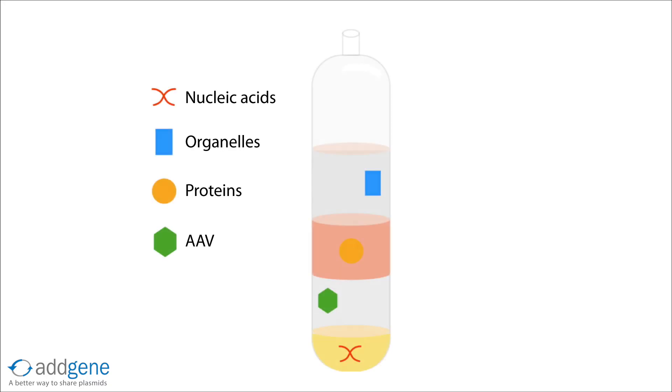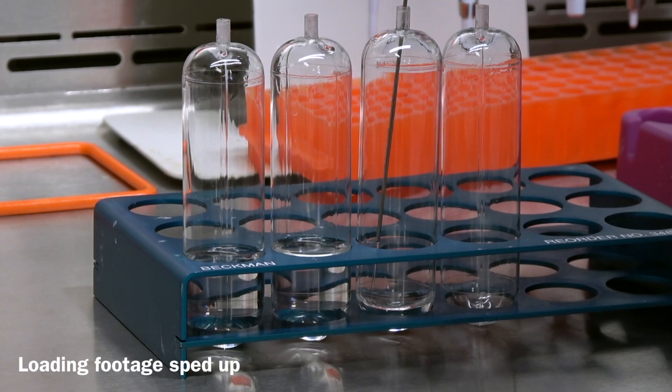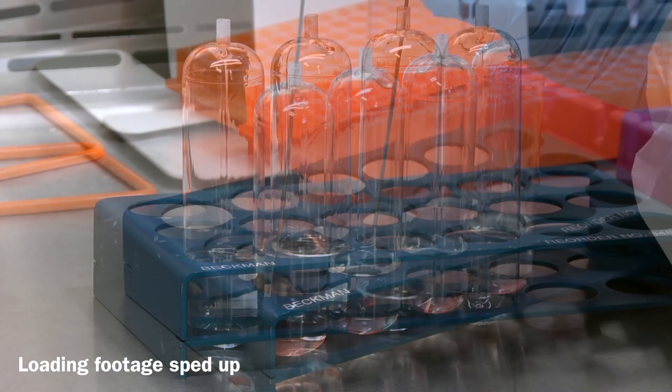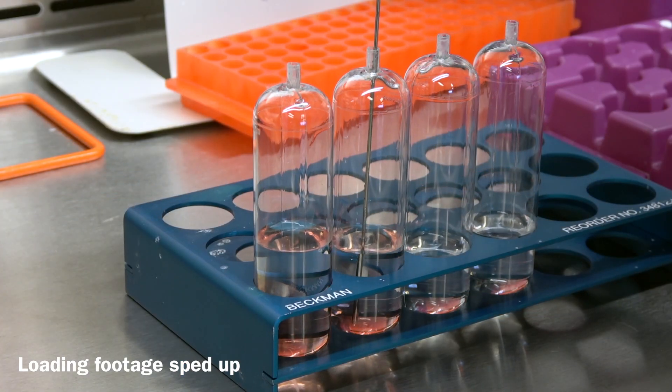A column with four densities of iodixanol is prepared by slowly layering the solutions. The bottom layer will be 60% iodixanol, and the lower density solutions will be subsequently layered on top.